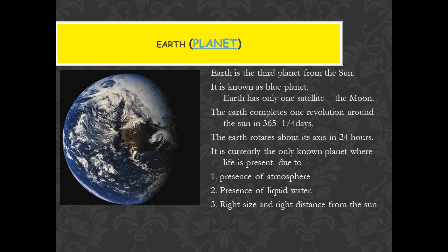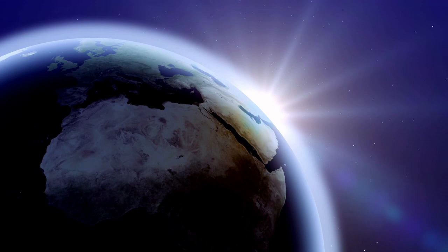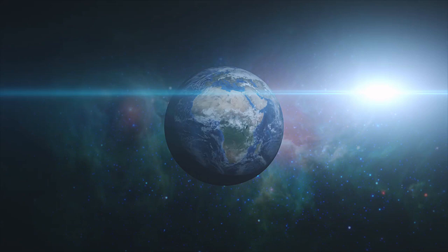The third planet is Earth. We call it Prithvi in Hindi. This is our solar system's third planet. In our research, Earth is the only living planet where life exists. Earth is called the blue planet because of its water. When we take satellite pictures of it, the water makes its color appear blue.